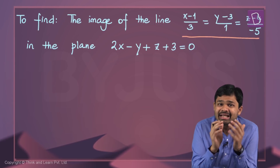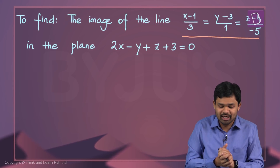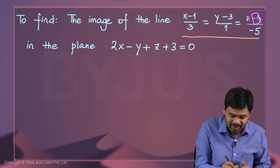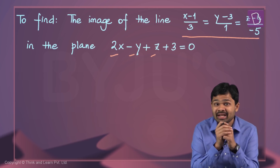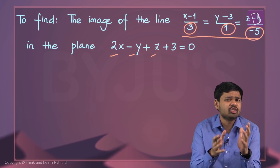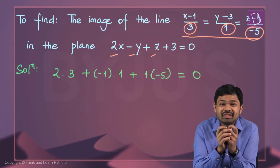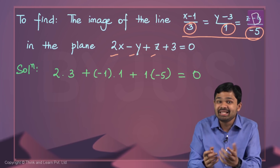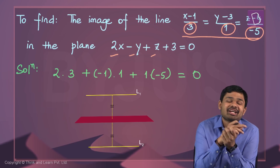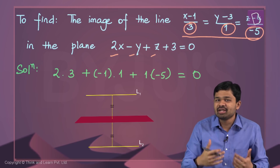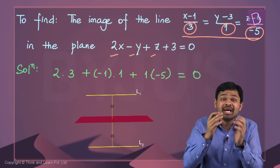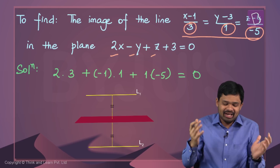Let's see how the plane and this particular line relate. The plane is 2x minus y plus z plus 3 equals 0, so the direction ratios of the normal are 2, minus 1, and 1. The direction ratios of the line are 3, 1, and minus 5. Taking the dot product of these two direction vectors gives 0, which means the normal to the plane and the line are perpendicular — so the plane and the line are actually parallel. This makes life really simple: the image of the line will also be parallel to both the plane and the given line.